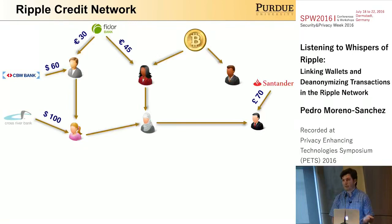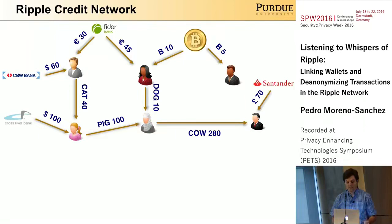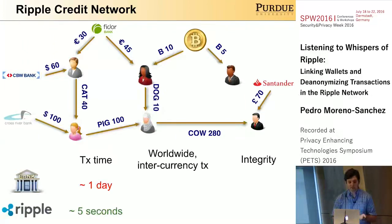We also have cryptocurrencies like Bitcoin, and it's even possible to have user-defined currencies like dog, cats, pigs, or whatnot. Ripple has several advantages over the current banking system: transactions can be performed much faster, taking a few seconds instead of several days.